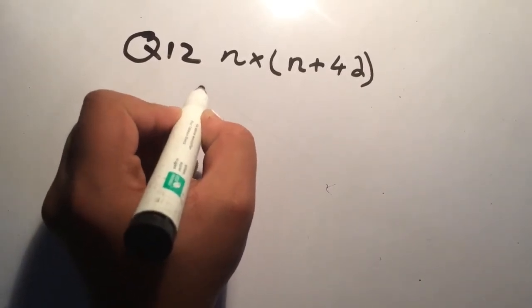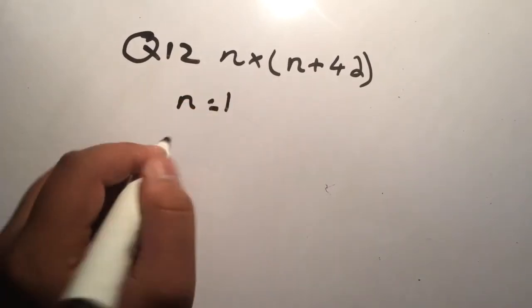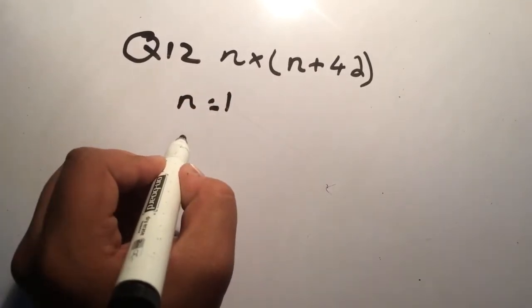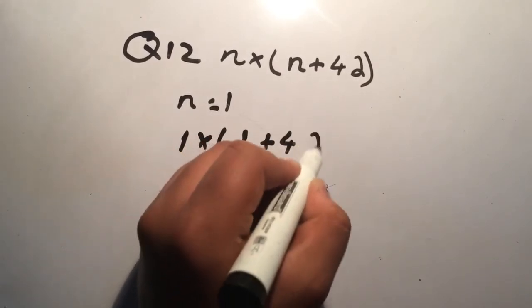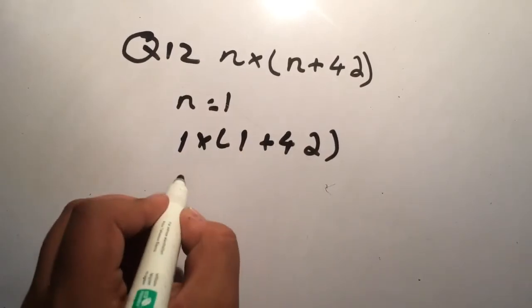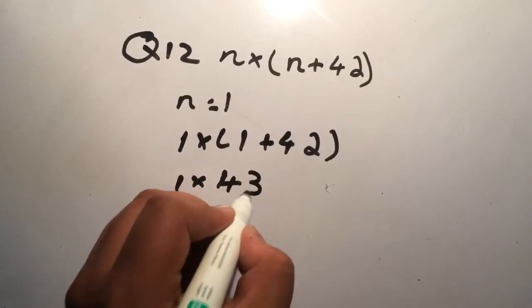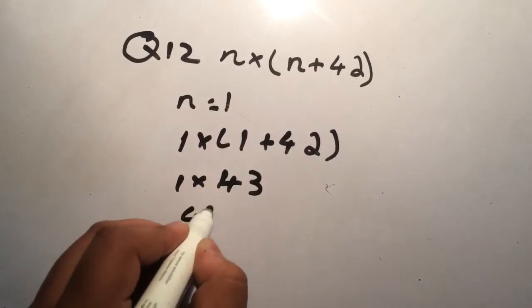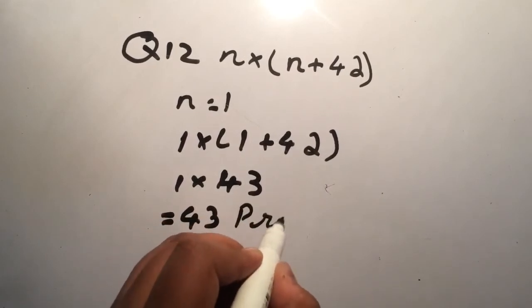So we have to take the answer as a prime number. Let's take n equals to 1, so 1 into (1+4). First solve the bracket: 1 into 43, then 43 is your answer and it's a prime number which they required in the question.